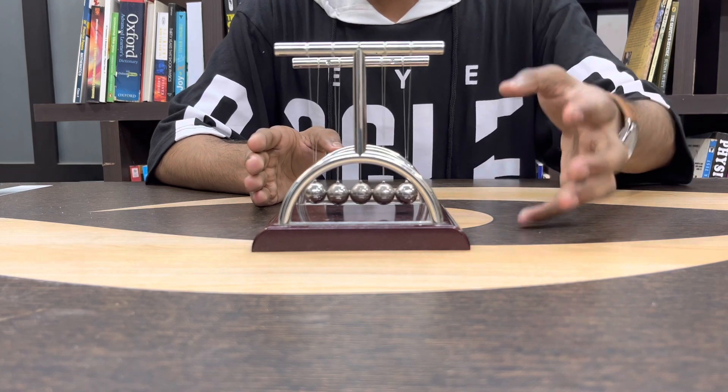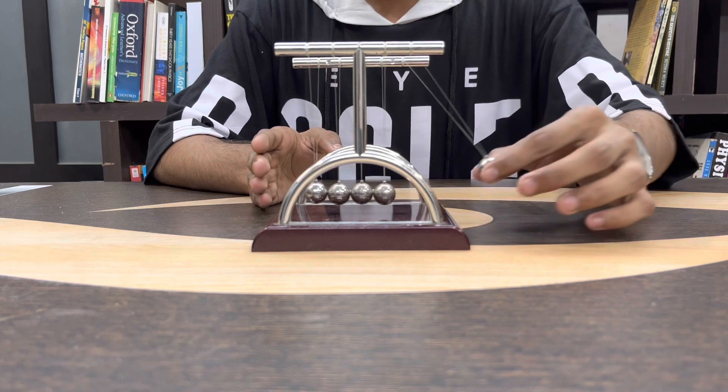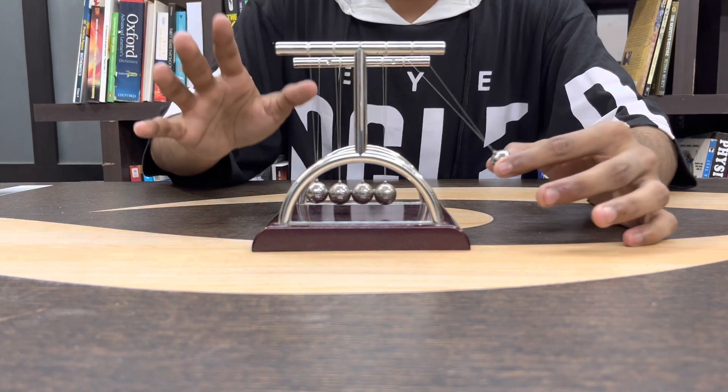The thing is that the initial momentum, since all the balls are identical, that's why it is happening. If one ball moves, then one ball will go from there, because that is the conservation.